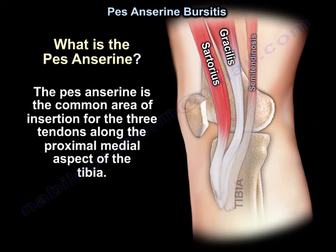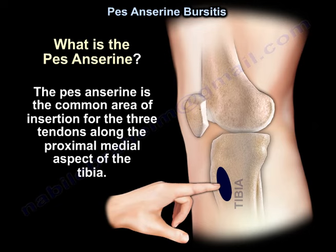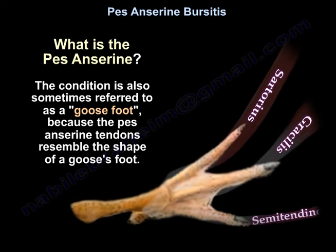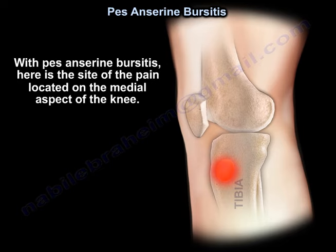The pes anserine is the common area of insertion for the three tendons along the proximal medial aspect of the tibia. The condition is also sometimes referred to as a goose foot, because the pes anserine tendons resemble the shape of a goose foot.